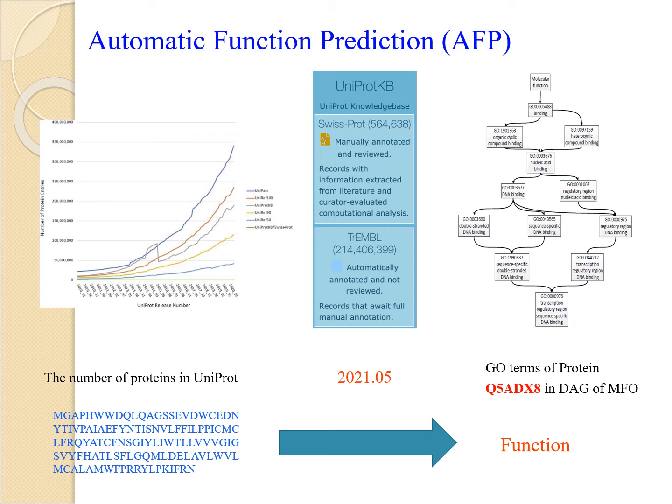With the rapid development of sequencing technology, the number of protein sequences has been explosively increased. Until this month, there are around 220 million proteins in UniProt. However, only half a million proteins are manually annotated and reviewed. Gene Ontology has been widely used for annotating protein function, and only around 120,000 proteins have GO annotations with experimental evidence.